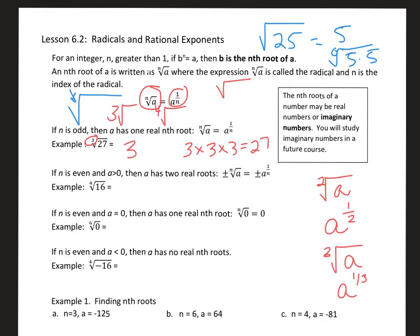So the fourth root of 16 you could think of as plus or minus 2, because negative 2 to the fourth is 16, and also 2 to the fourth is positive 16. If you take the root of 0 — whether even or odd — if you're taking the fifth root of 0 or the fourth root of 0, then the answer is 0.